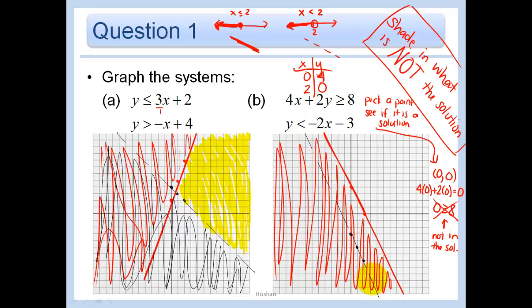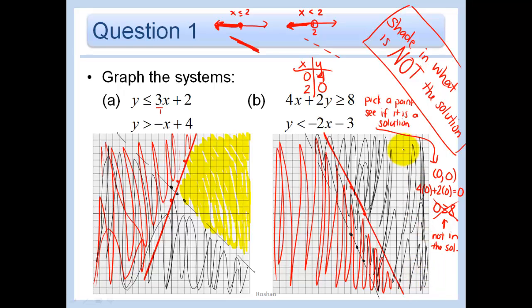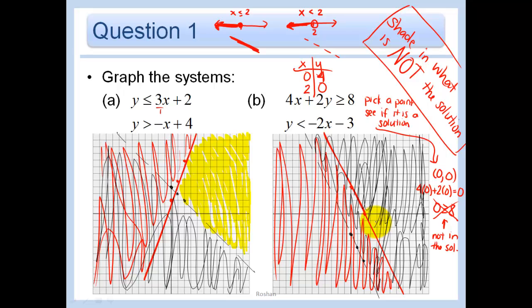And in this one, we can just go with the fact that it's a less than. Therefore, the answer lies below, and we're going to shade in what is not the answer. So we're shading in all above. So it looks like we don't have any area that's white. Therefore, there is no common area that is shaded in this. So no solution.